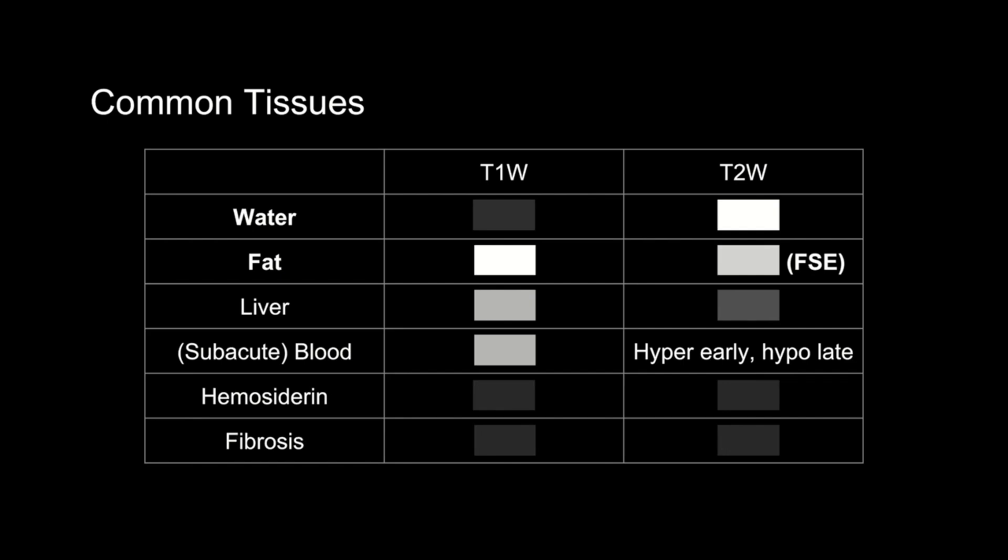Lastly, not on this diagram, but air and metal are going to look completely black on all sequences because there are no water or fat hydrogen nuclei in either.